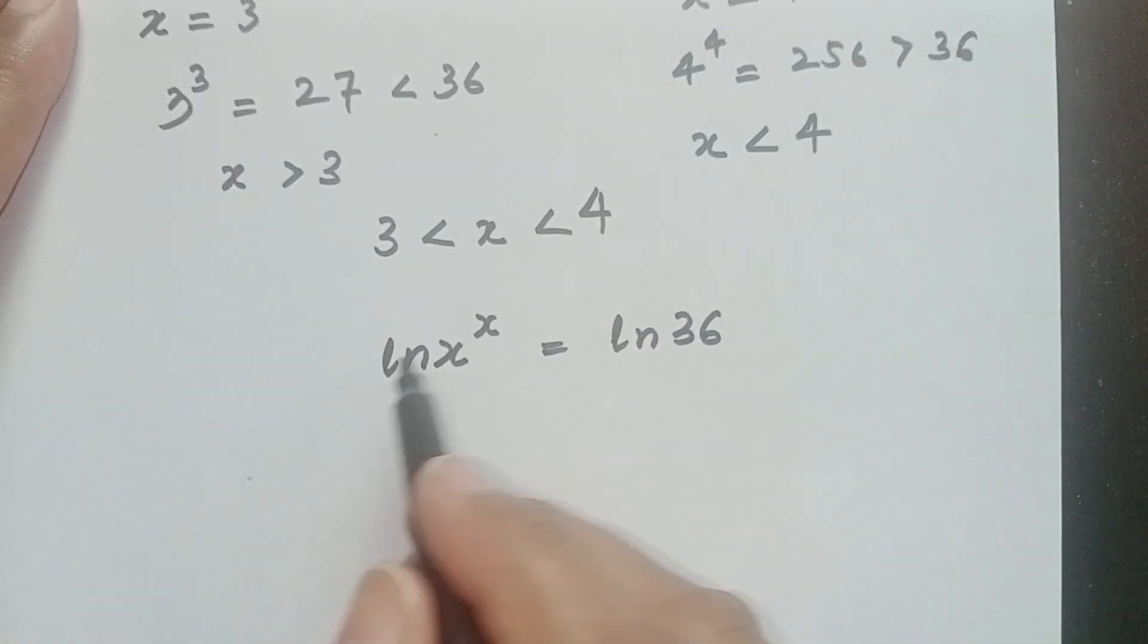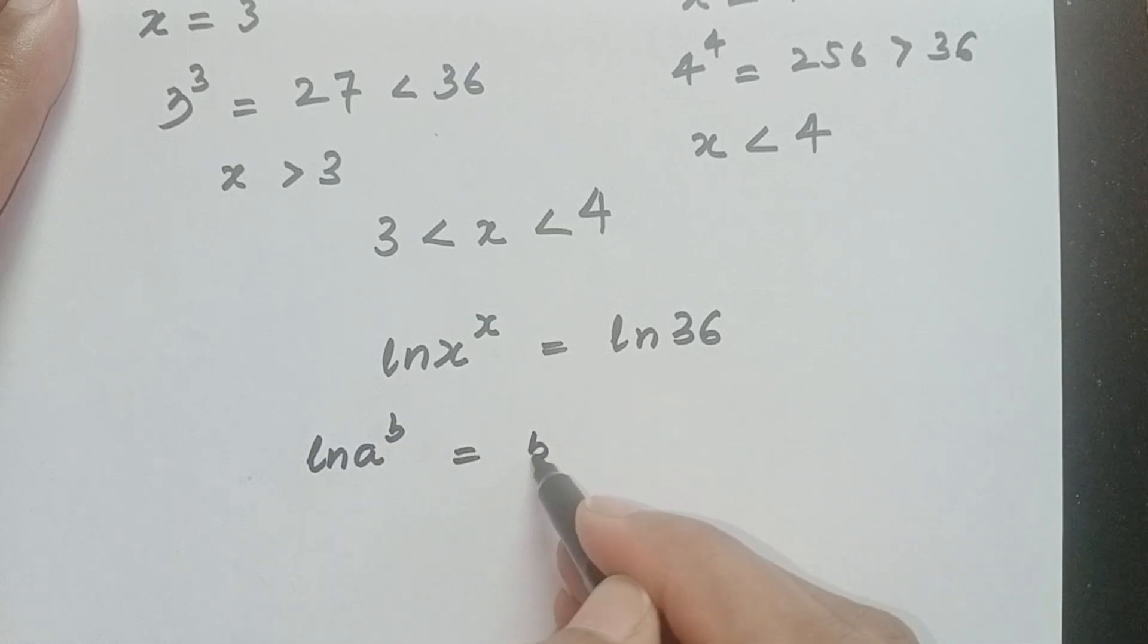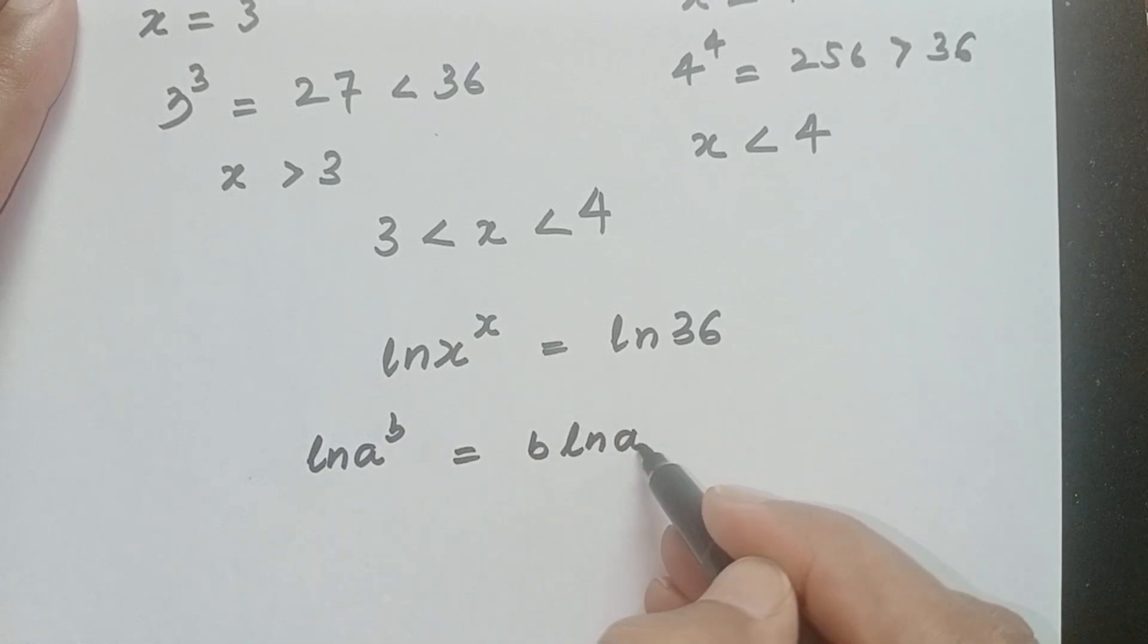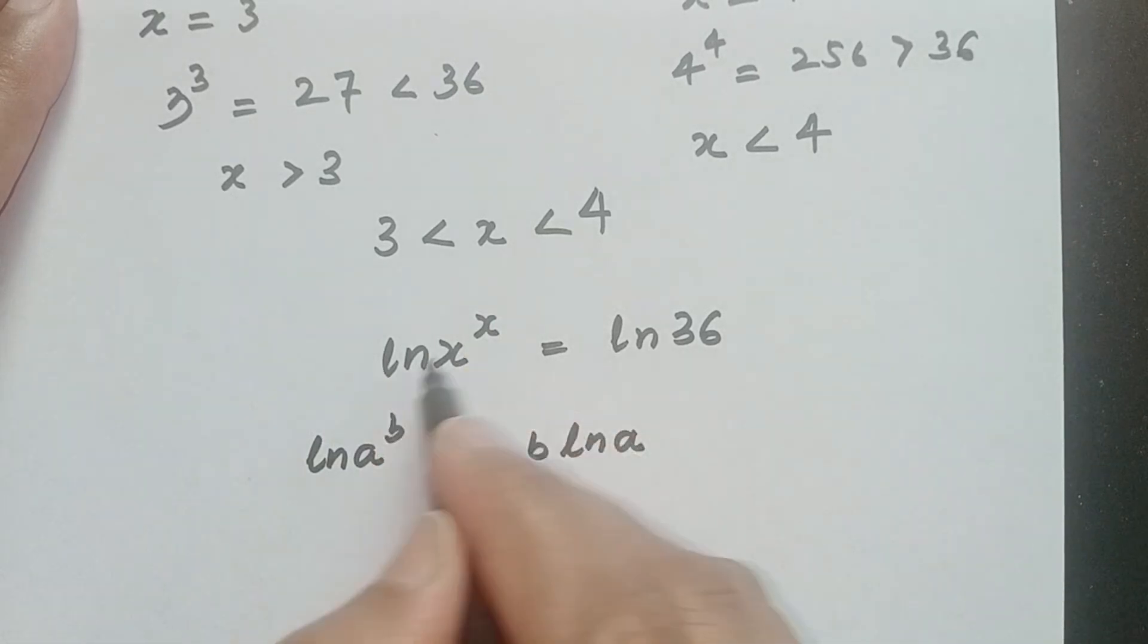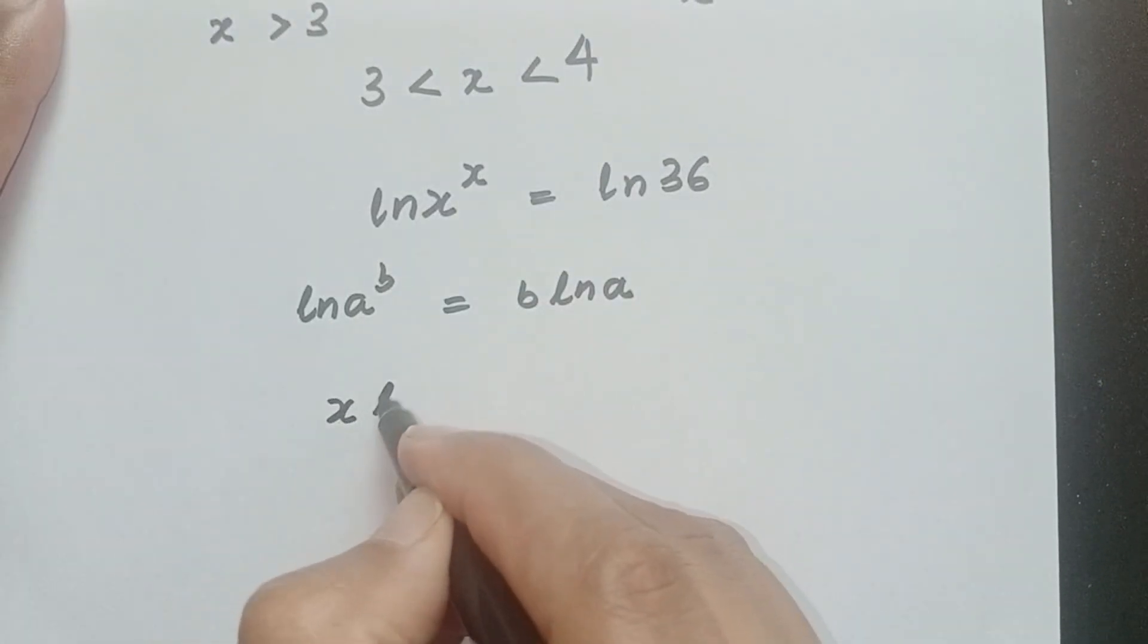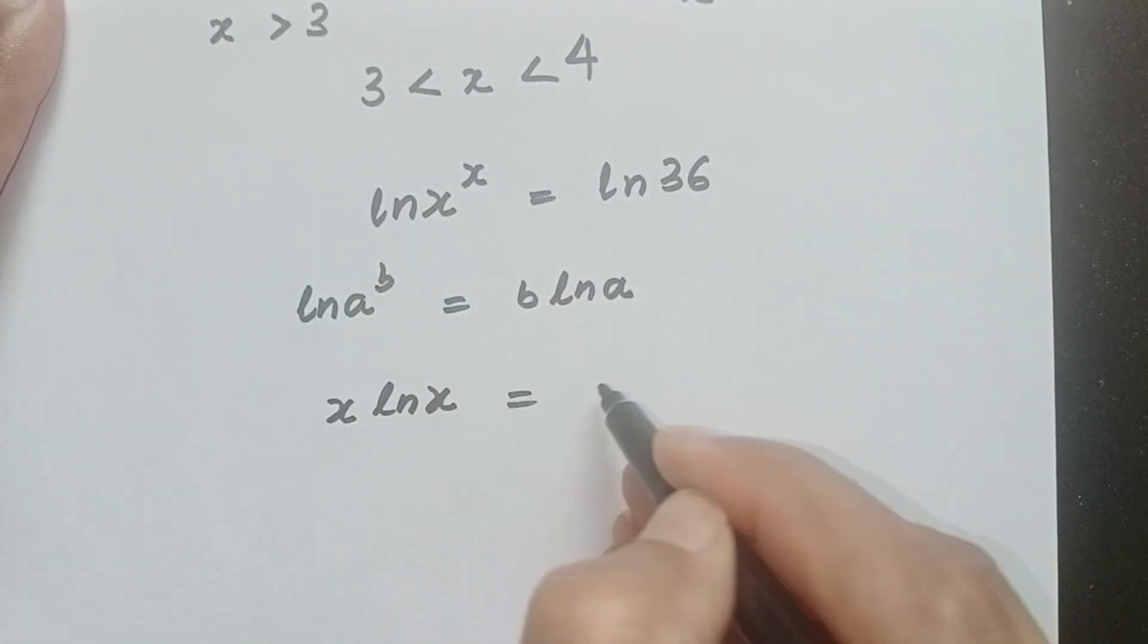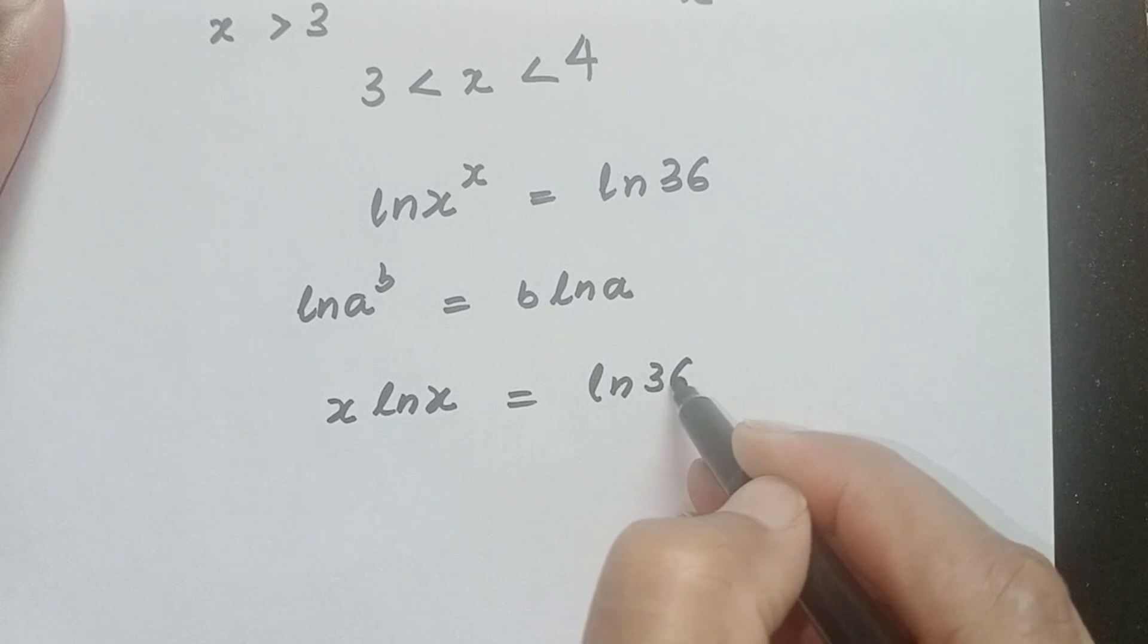Now we know that a very well-known, very common property of ln: if ln a power b is given, this b will shift here, we can write b ln a. Now we are going to use this property here, we can write x ln x is equal to ln 36.